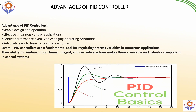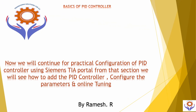The advantages of PID controller include simple design and operation, applicability in various control applications, effective and robust performance even with changing operating conditions, and relatively easy tuning for an optimal response. Overall, the PID controller is a fundamental tool for regulating process variables, combining proportional, integral, and derivative actions to make it a versatile and valuable component in control systems. Now we will continue with the practical configuration of PID controller using Siemens TIA Portal — how to add the PID controller, configure the parameters, and perform online tuning.